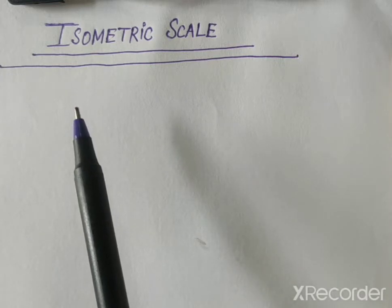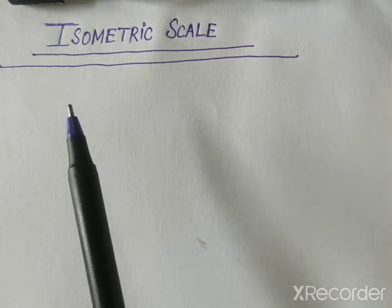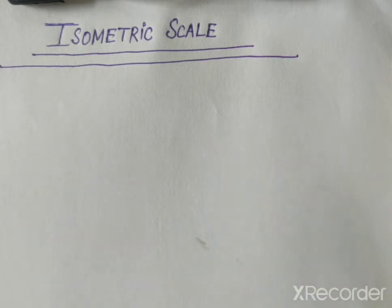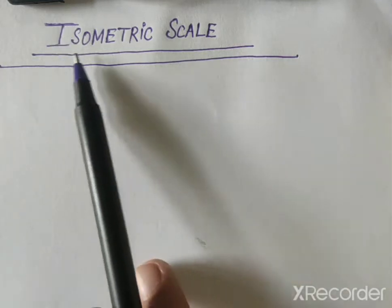So whenever we draw the isometric projections, we see that all the lengths are shortened. How much they are shortened, we get to know with the help of isometric scale.